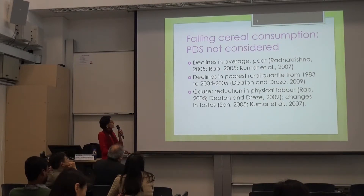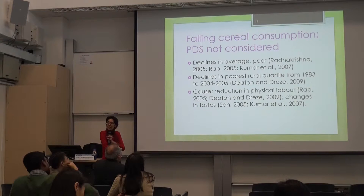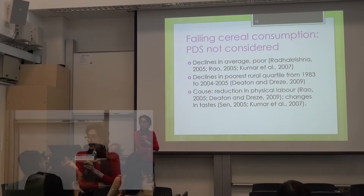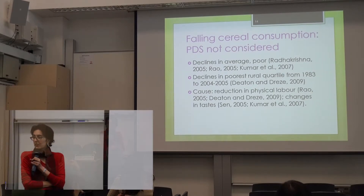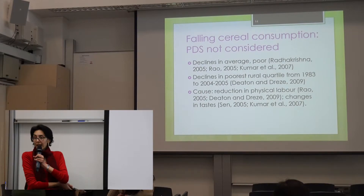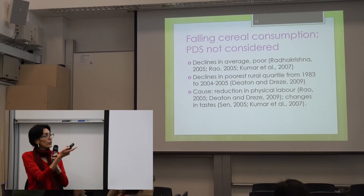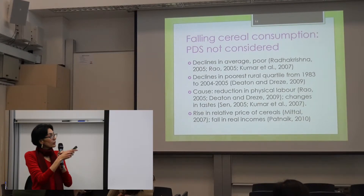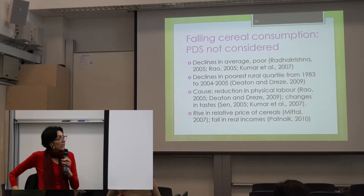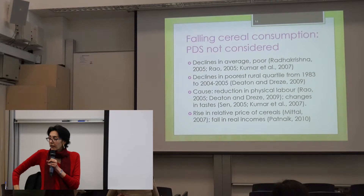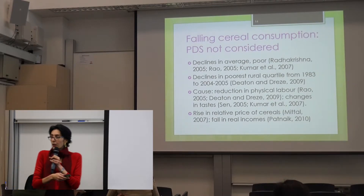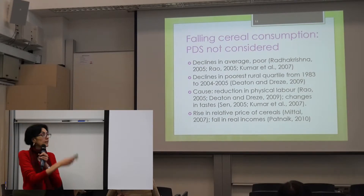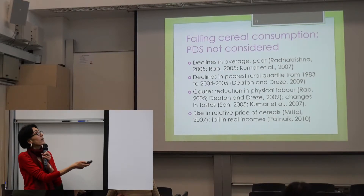The reasons these studies give for a general trend of falling cereal consumption include a reduction in physical labor, because transport and agriculture have become more mechanized and infrastructure has improved. So people are actually doing less physical labor, and therefore they claim that leads to lower calorie requirements and cereal consumption. There's also a presumption of changes in tastes and preferences. The issue most relevant to my work is they've also suggested that there may have been a rise in the relative price of cereals or a fall in real incomes, and either of these could offset any positive impact created by the PDS. So I control for these two factors in my study.